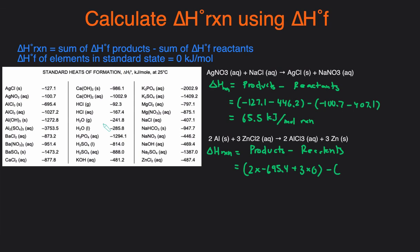So that'll be the sum of the products now minus the sum of the reactants. Two times the value of aluminum. We look at the table we don't see aluminum. And again that's because aluminum solid is the natural form of the element. So that'll just be zero. So it'll be two times zero plus three times the value of the ZnCl2, which we see is right here. It's going to be negative 487.4.